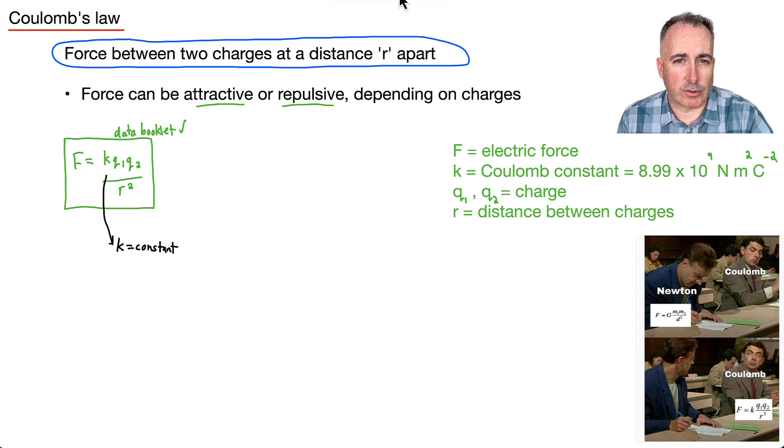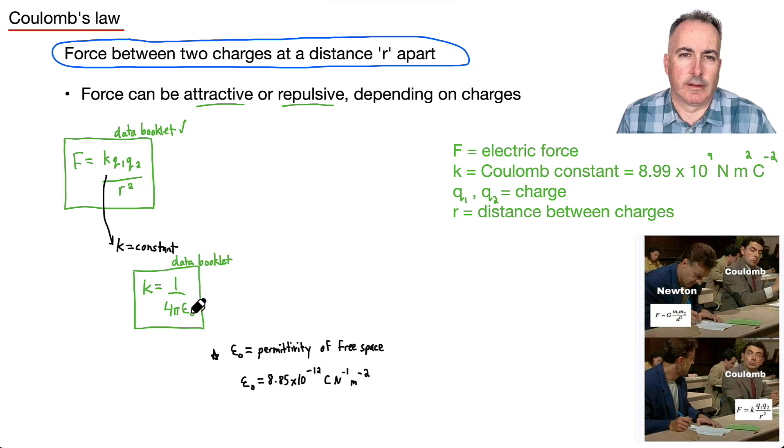So this is a constant, and we actually have an equation for it as well. This is also in your data book. It goes 1 over 4 pi epsilon 0. So if you look at this, it goes 1 over 4 pi epsilon 0, where epsilon 0 is this permittivity of free space, or this is a property of, for example, air or a vacuum. And if you need to find that value, that's also in your data booklet. So it's just 8.85 times 10 to the minus 12 coulombs squared per Newton per meter squared.